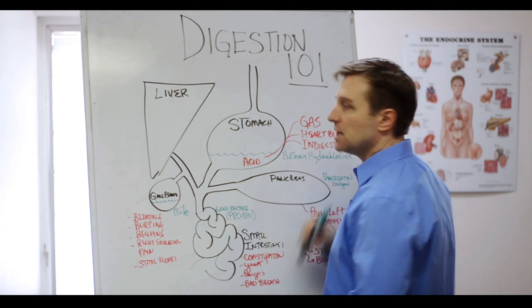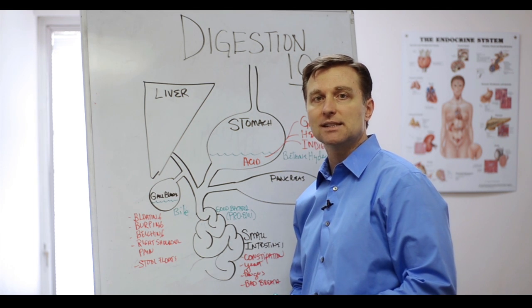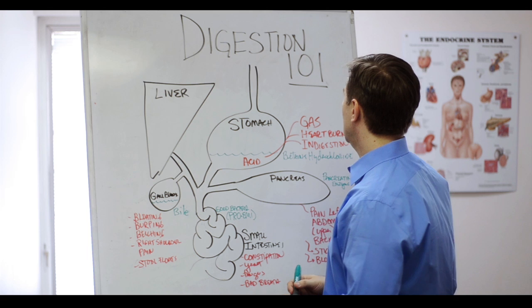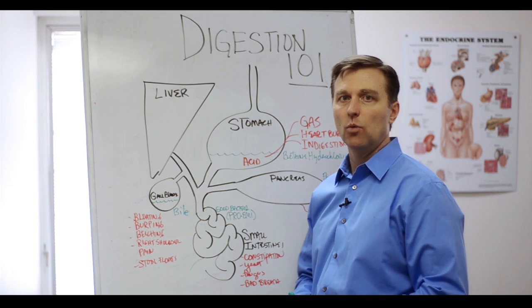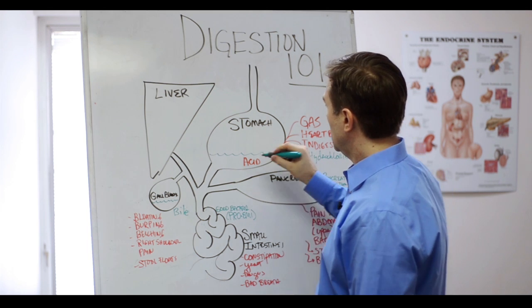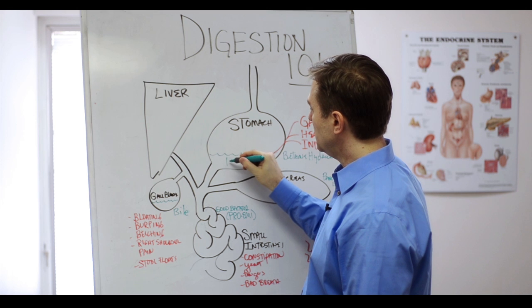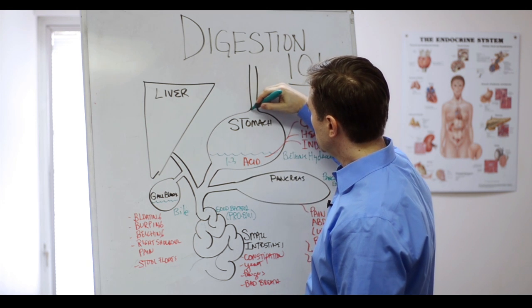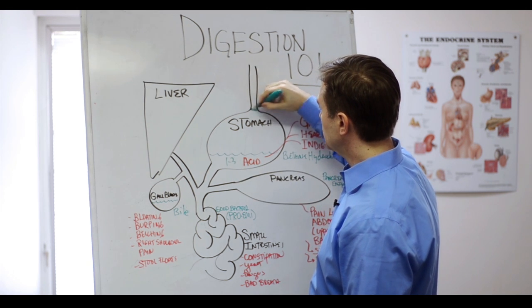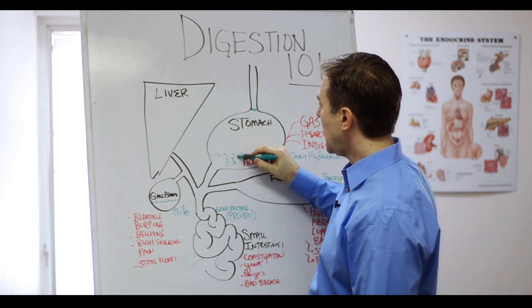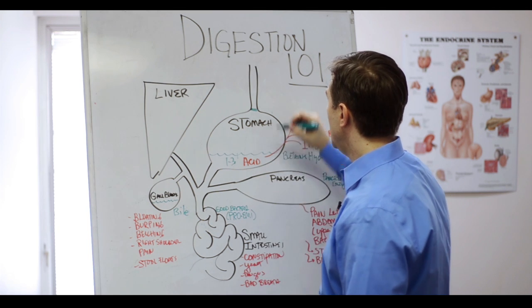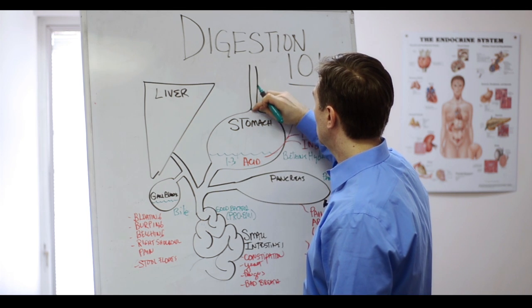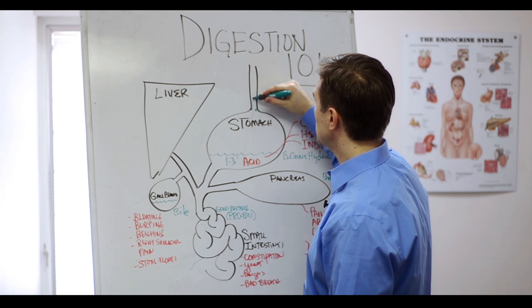Number one, you get undigested protein, and that's putrefaction, that's gas. Number two, you're going to get heartburn. Why? Because this pH has to be between one and three to be able to keep this valve closed. And if this pH goes higher, more alkaline, then this valve starts opening up right here, and acid starts splashing up here.